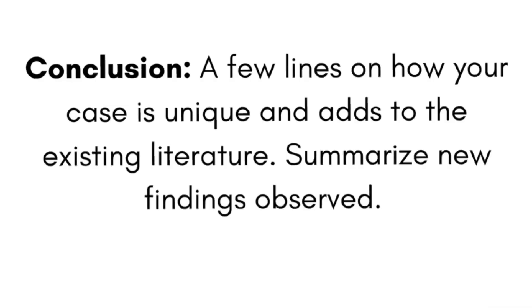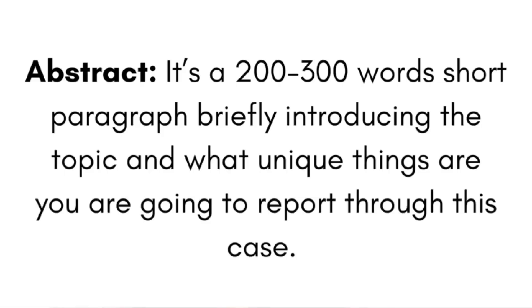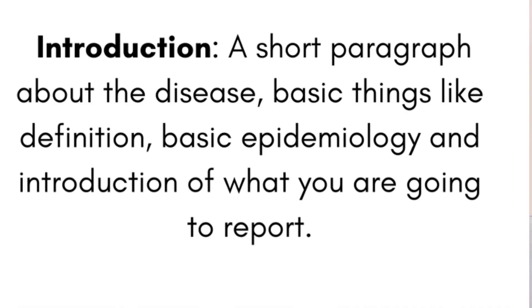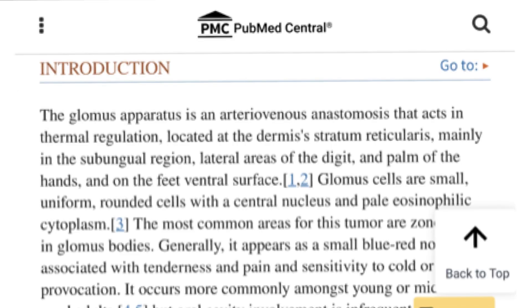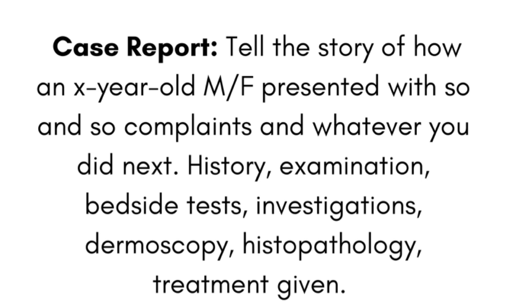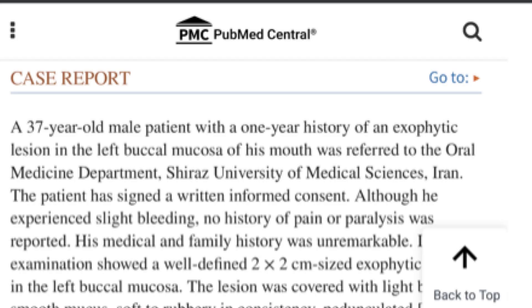After discussion, write the conclusion — just a few lines on how your case is unique and how it adds to the existing literature, summarizing the new findings observed and why you are reporting this case. Then write the abstract, which is a 200 to 300 word short paragraph briefly introducing the topic and what unique findings you are reporting. The introduction is a short paragraph covering the definition, basic epidemiology, and an introduction to what you are going to report. Then the case report section tells the story: how an X-year-old male or female presented with complaints, including history, examination, bedside tests, investigations, dermoscopy, histopathology, and treatment given.